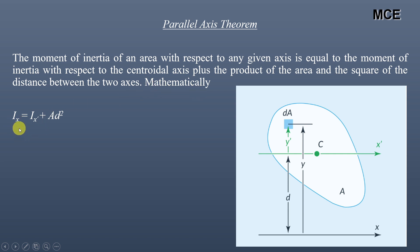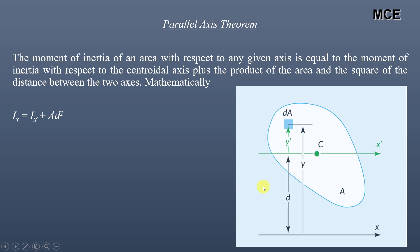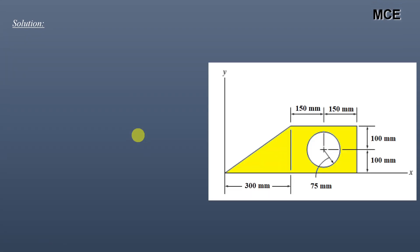Mathematically, suppose we have to calculate the moment of inertia of this body about this x-axis, which is parallel to the centroidal x-axis. The moment of inertia about this x-axis equals the moment of inertia about its own centroidal x-axis, plus the area of the shape multiplied by the square of the distance between these two axes. This is the parallel axis theorem.